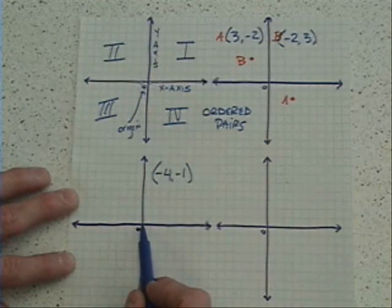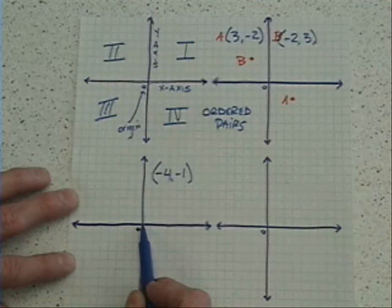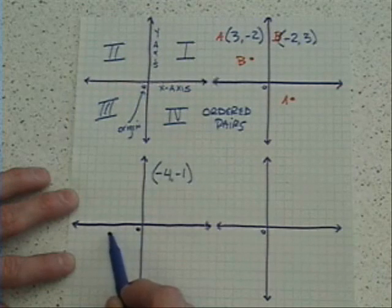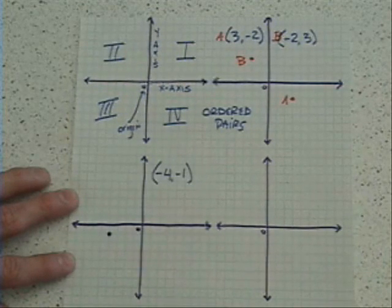You would one more time start at the origin, move in this case left four spaces: one, two, three, four, and then down one space, and you would arrive at negative four, negative one.